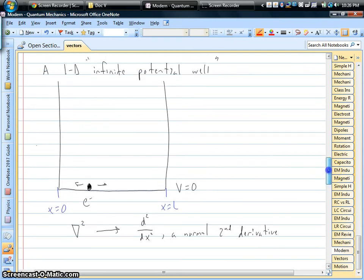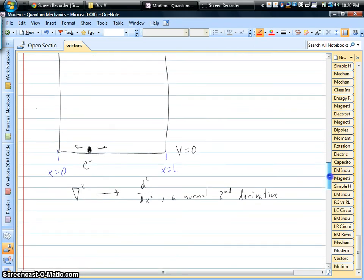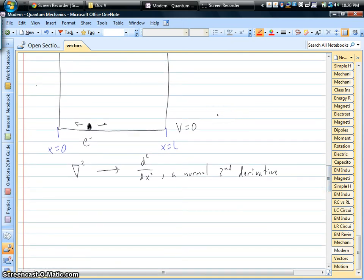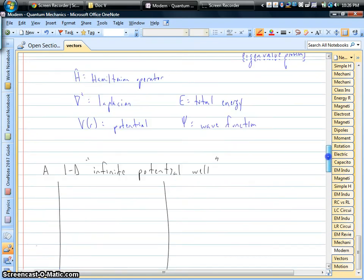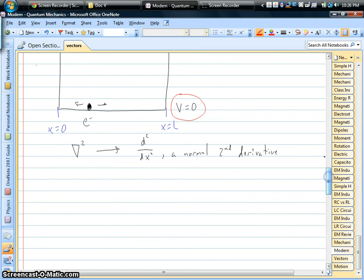Because it's only one-dimensional, only going side to side, this weird upside-down triangle reduces down to a plain old second derivative. What's more, we're going to say this electron is in the ground state, its lowest energy. There's no potential energy, so our V term in the Schrödinger equation is zero.